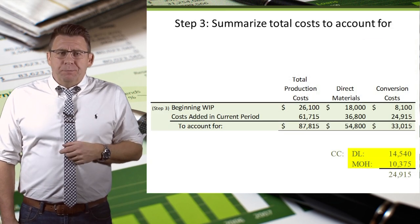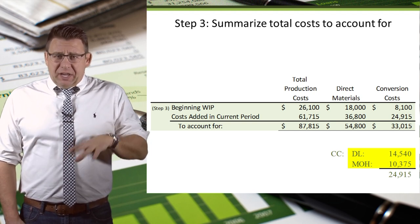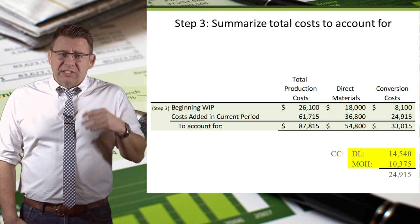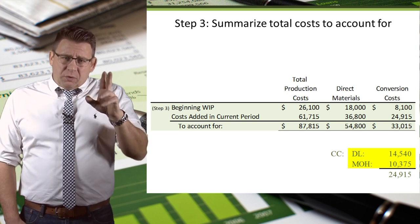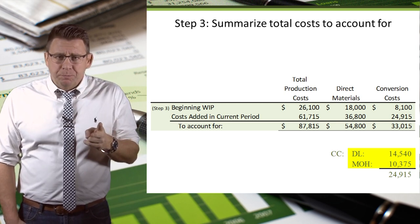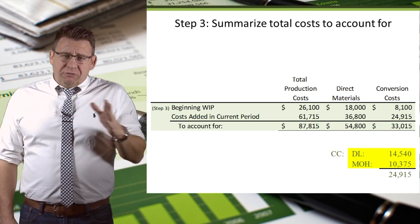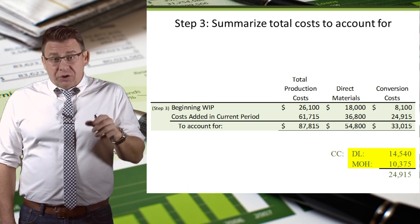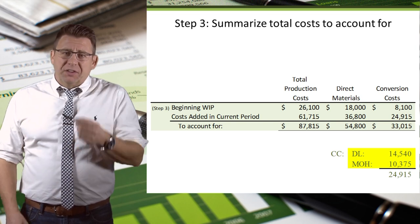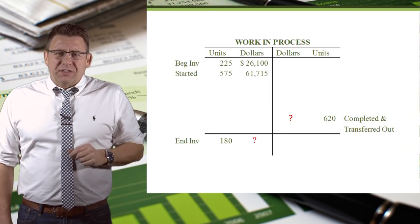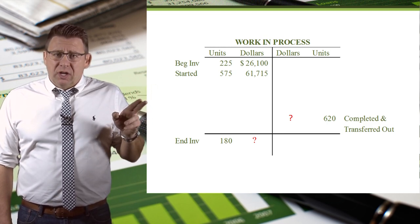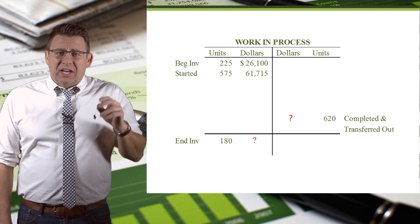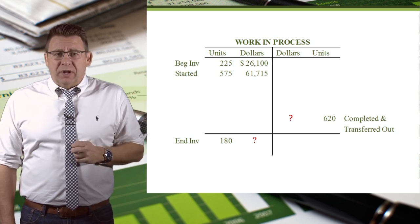Step 3 is similar to step 1. Here we are summarizing the total production costs to account for. The beginning units of WIP have direct materials and conversion costs already assigned to them. The new units started have direct materials and conversion costs attached as well. Recall that conversion costs are direct labor and manufacturing overhead. Product costs are normally classified as direct material, direct labor, and manufacturing overhead. If you see a homework problem where you're given labor and overhead separately, you'll need to add them together to arrive at the conversion cost. The total cost transferred out, plus cost remaining in ending WIP inventory, needs to total $87,815.